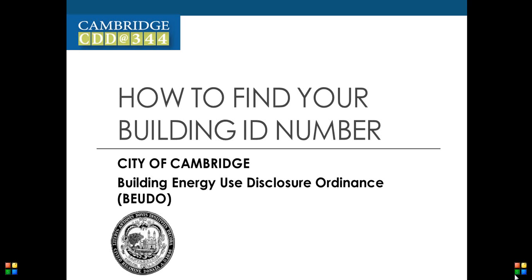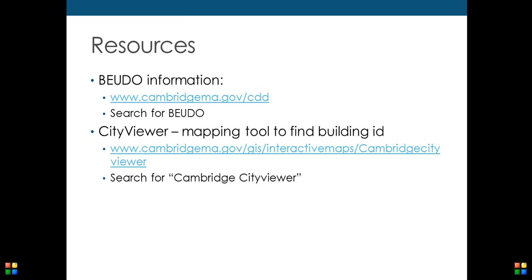Hi, I'm Hannah Roman with the Cambridge Community Development Department. In this tutorial, I will show you how to find your building ID number using the City's online mapping tool. You will need to use the building ID number to identify each building on your property in Portfolio Manager. More information about Portfolio Manager and complying with the Cambridge Building Energy Use Disclosure Ordinance can be found on the CDD website listed here.